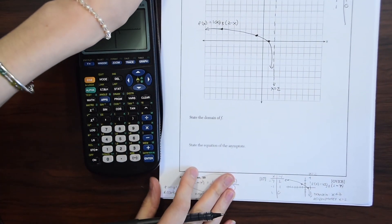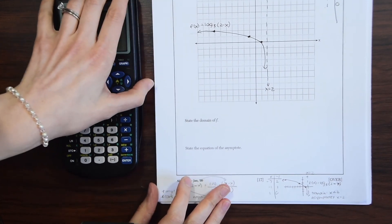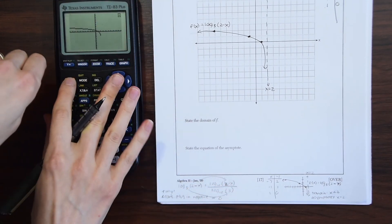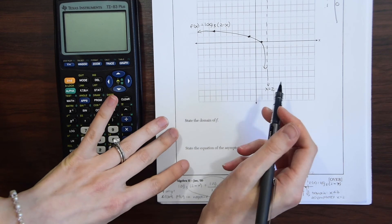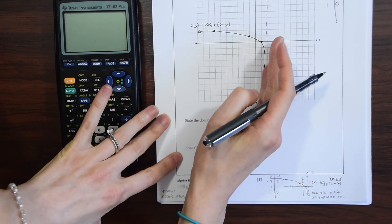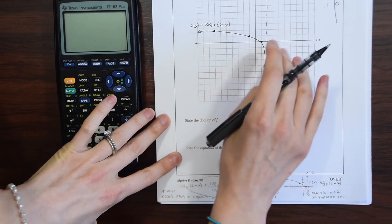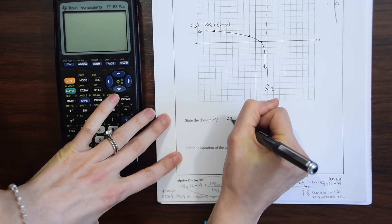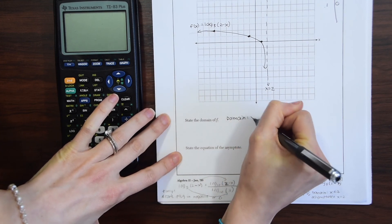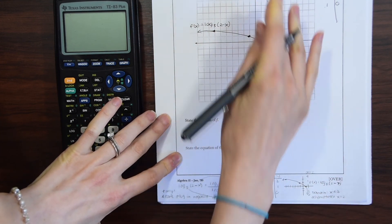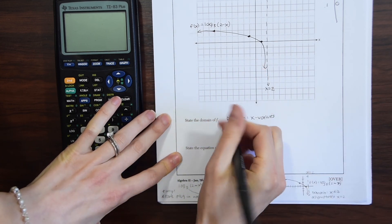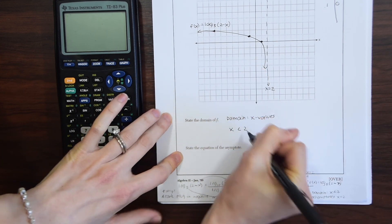There are more questions to this, so let's check these out. State the domain of f. We know that x can be anything less than 2, right? The domain is always the x values. As you can see here, since we have an asymptote, we know that all the x values are going to be less than 2.